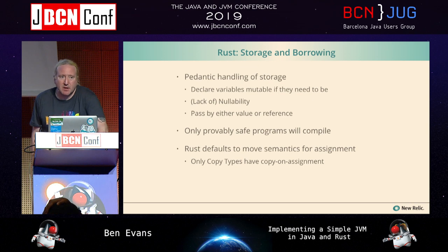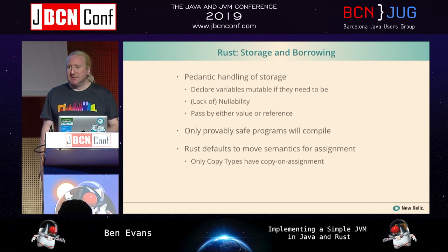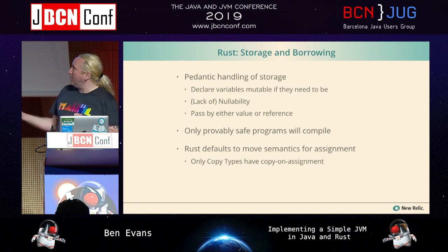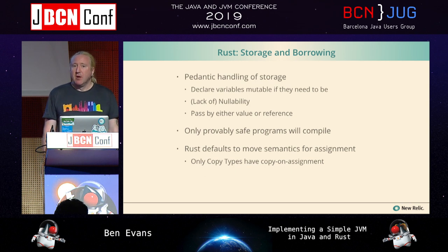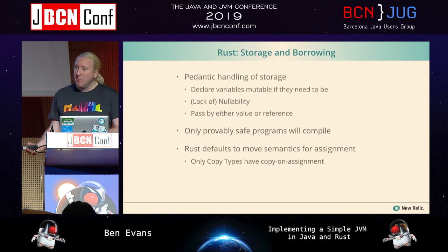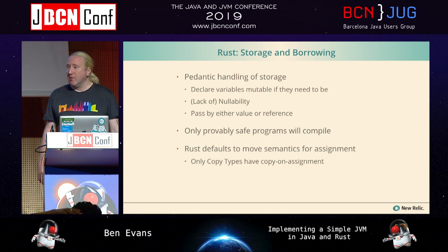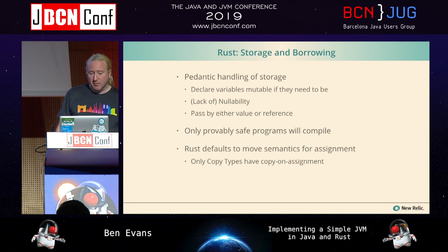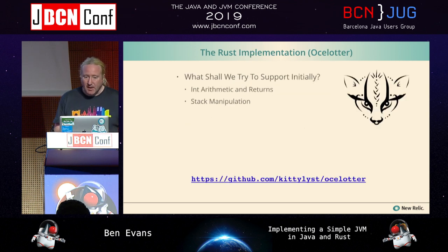Mutability also factors into the type itself — if you take a reference to something, the mutability is part of that reference's type, like const done correctly but on steroids. The payoff and kicker for Rust: it will only compile a program it can prove is safe. It's possible to write semantically correct safe programs that a human can recognize as safe but which the Rust compiler will reject because it cannot prove their safety. If a Rust program compiles, it should run without seg faults.